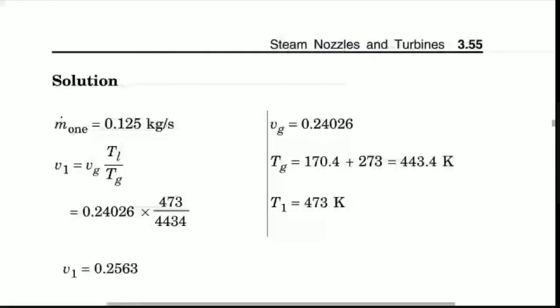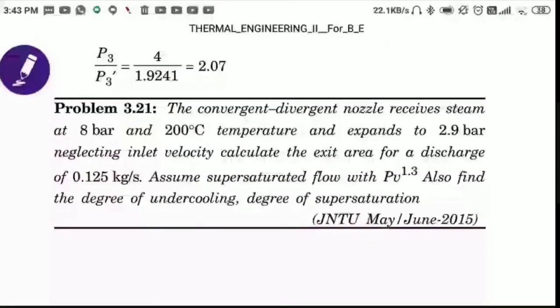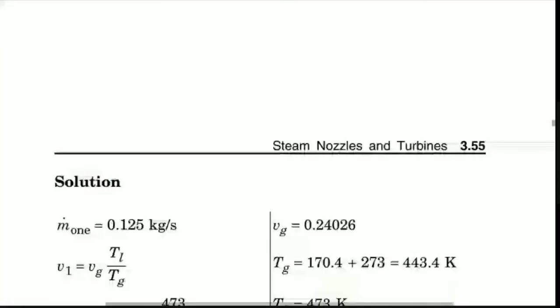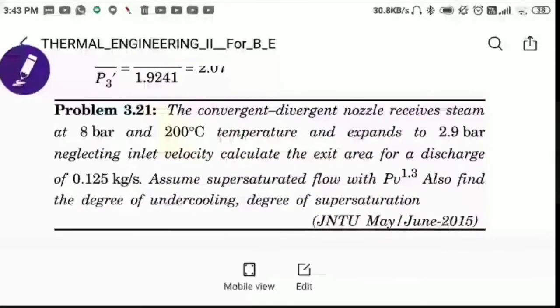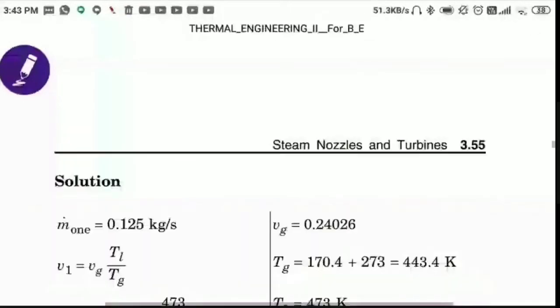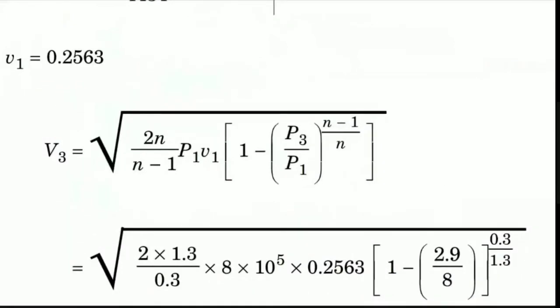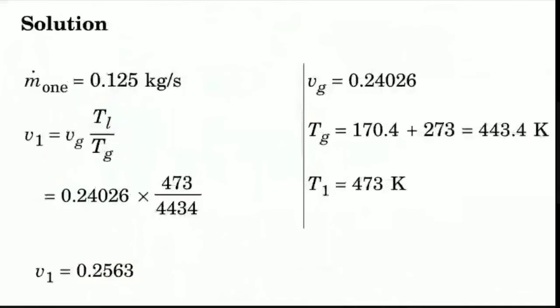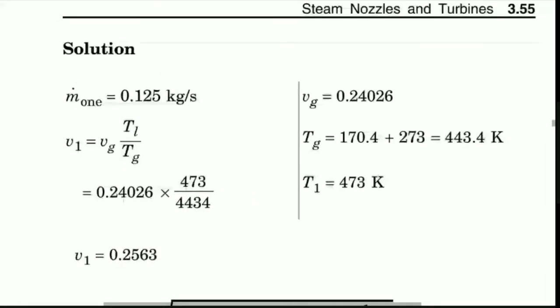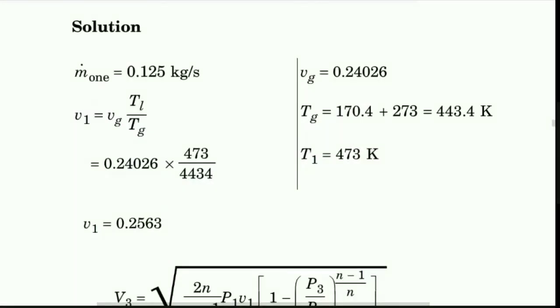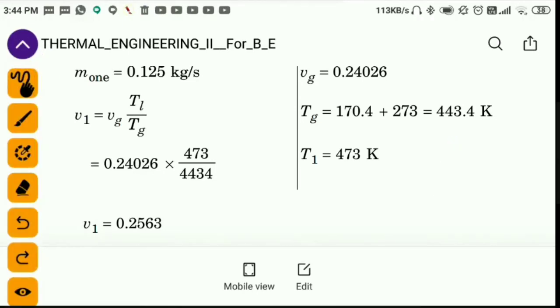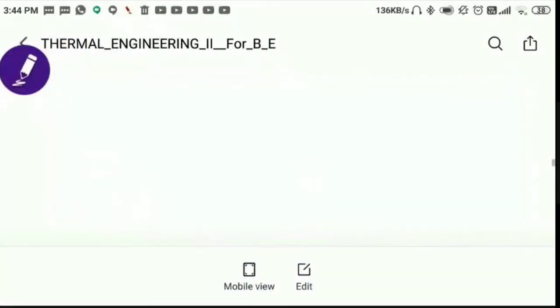Let's see the question. 8 bar at 200 degrees. This is P1 and T1. What's the mass? The exit area, the mass flow is 0.125 kg per second. So we have mass flow.